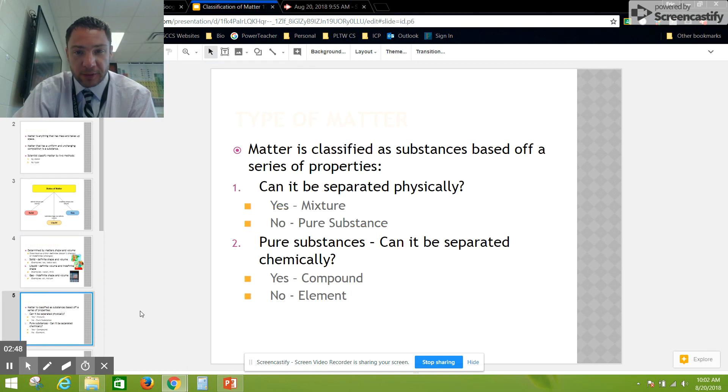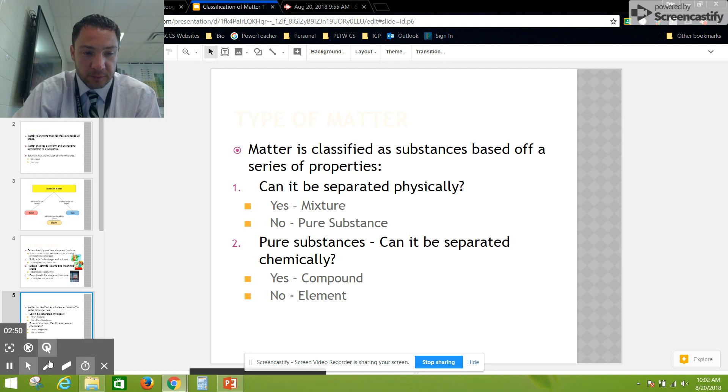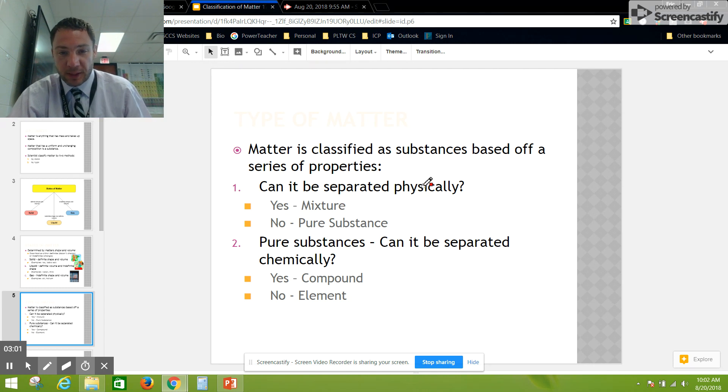Now let's talk about how we define matter based off of type. Matter is classified based off of a series of properties. The first question we ask is: can it be separated physically? If yes, then it is a mixture. If no, it's a pure substance.